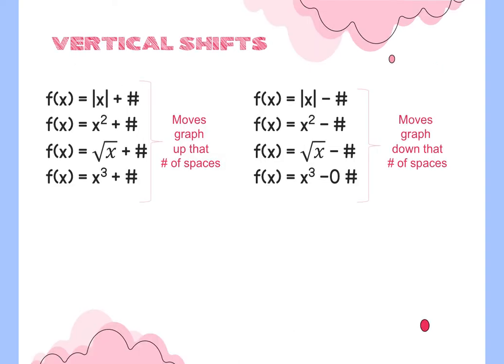The first transformation is vertical shifts. If you are adding or subtracting a number outside the parentheses — outside the absolute value, outside the square root, not underneath or in parentheses — it causes a vertical shift. Adding a number shifts your graph up that many units. Subtracting — like x squared minus a number, or the cube root minus a number — shifts the graph down that many spaces. You just physically take your vertex and move it up or down.